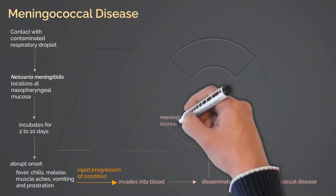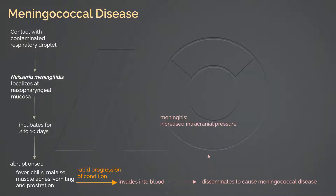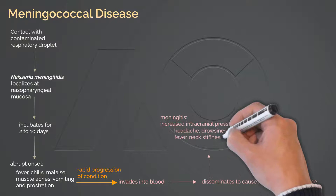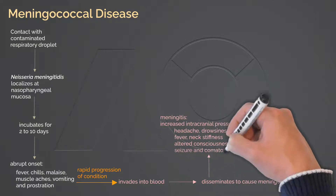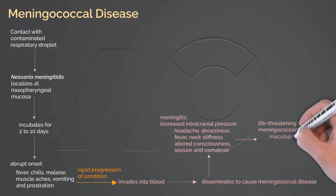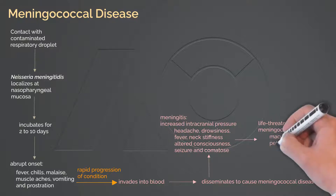With meningitis, patients manifest with increased intracranial pressure as inflammation and adhesion of the pia-arachnoid membrane blocks CSF flow. Neurological signs and symptoms include headache, drowsiness, fever, neck stiffness, altered consciousness, seizures, and coma. Neisseria meningitidis-caused meningitis may or may not be accompanied by meningococcemia, which is life-threatening, manifesting as maculopapular rash, petechiae, purpura, and sepsis.